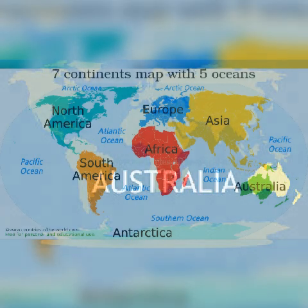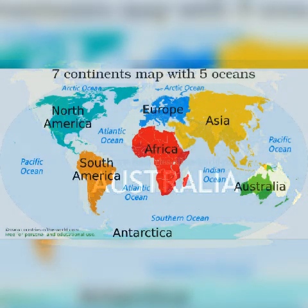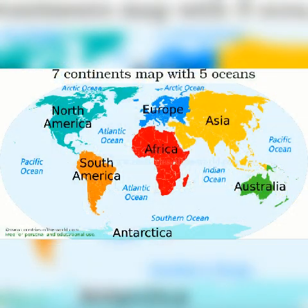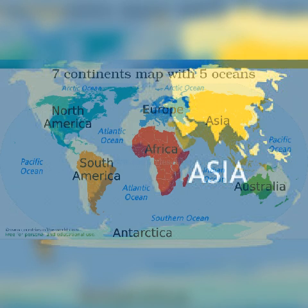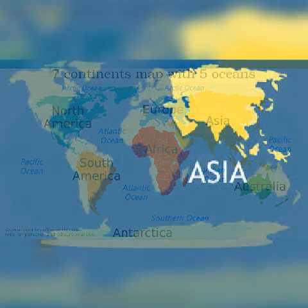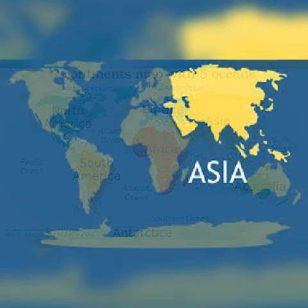Observe the map and identify the several countries located in the seven continents. Can you tell me the examples for the countries in the Asian continent? Russia, China, India, Japan — so these are the examples.